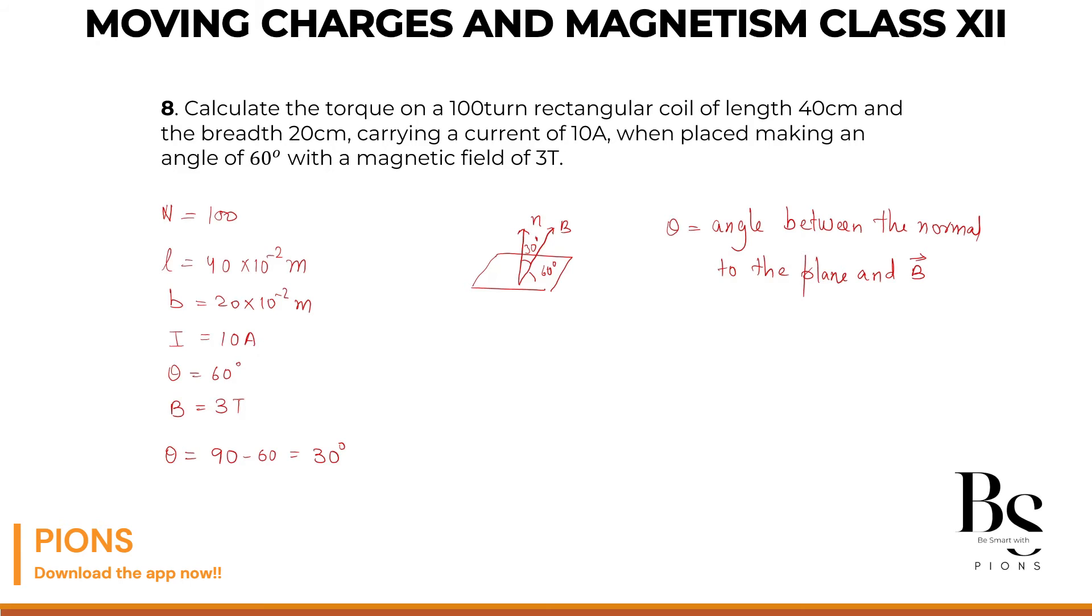What we have to find? Torque. Torque is equals to n i a b sine of angle theta. What is number of turns? 100. What's the current? 10 ampere. What's the area?